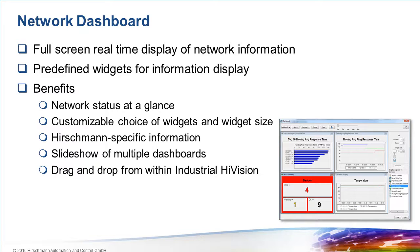The security widget displays how many rogue devices are attached to the network, and also shows how many devices are running configurations different from their reference configuration. There's a widget to display bandwidth utilization for a link in both directions. Another widget shows the 10 devices with the slowest response times across the network — this widget automatically selects the worst top 10 devices. It's also possible to define which specific devices should be monitored for response times.